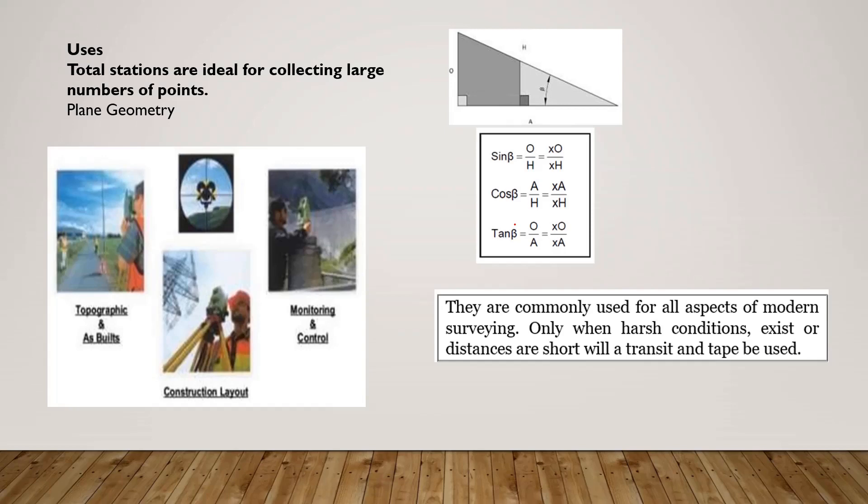Total stations are commonly used for all aspects of modern surveying with a large number of points. Only when harsh conditions exist or distances are short will a transit or tape be used. For short distances, you can use the tape.